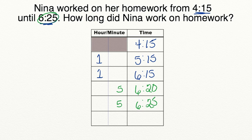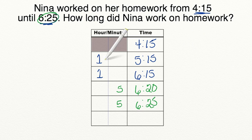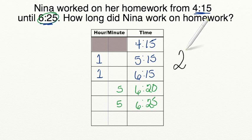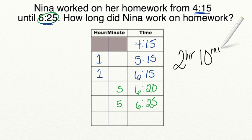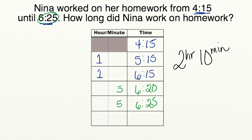Now all we have to do is add these numbers together. We have 1 hour plus 1 hour, which equals 2 hours. And 5 minutes plus 5 minutes equals 10 minutes. So our elapsed time is 2 hours and 10 minutes.